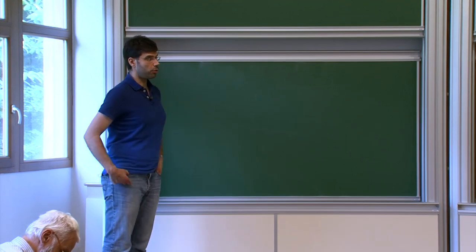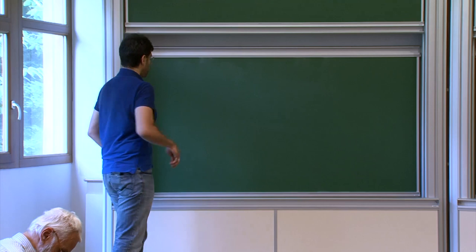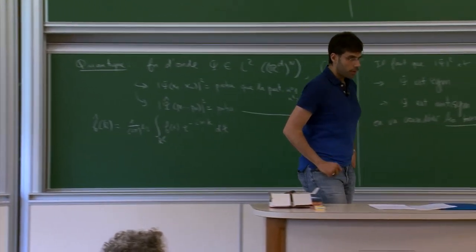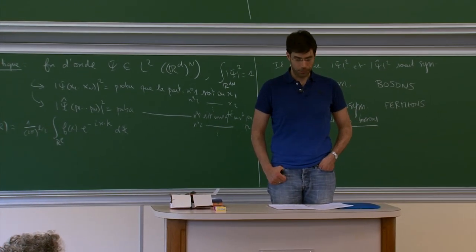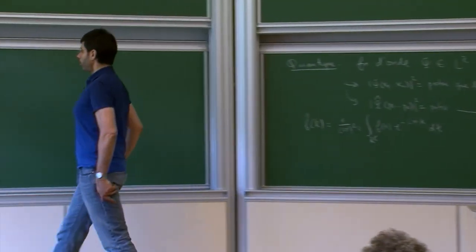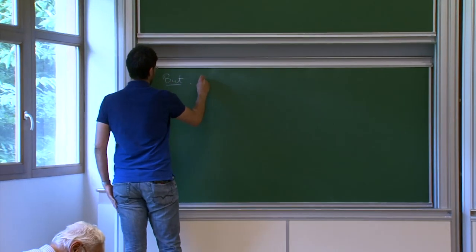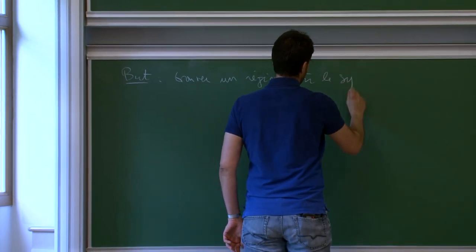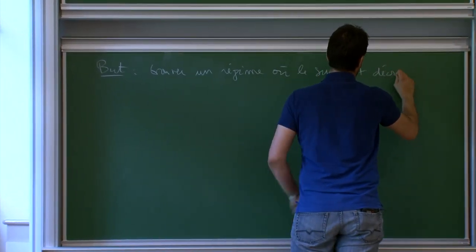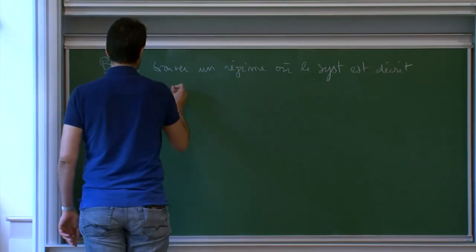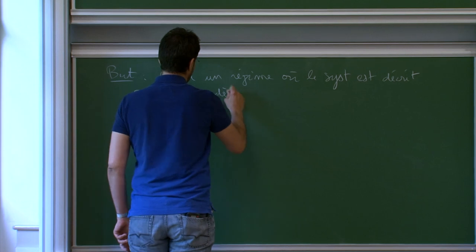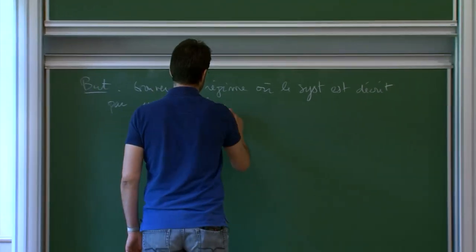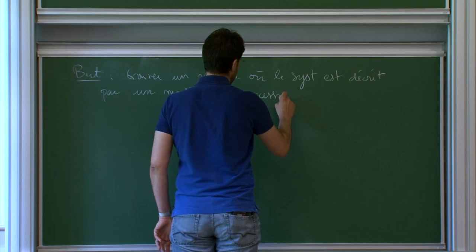So from a practical point of view, this equation is not very useful. It is very simple — it fits on one small line — but it is very hard to do anything with it. People are very eager to find approximations that are more accessible and that one can, for example, simulate on a computer. The goal is to find a regime where the system is described by a simpler — more accessible numerically — model.